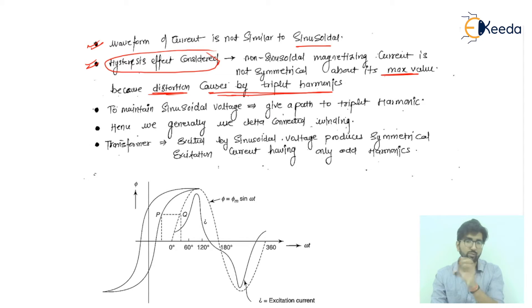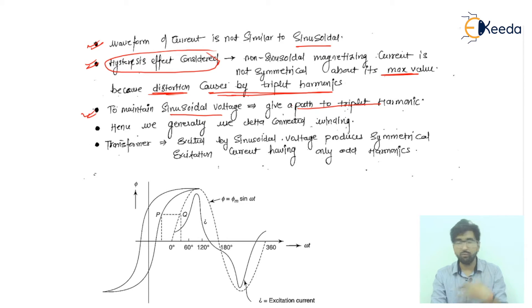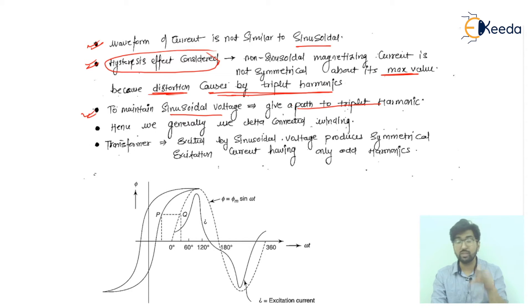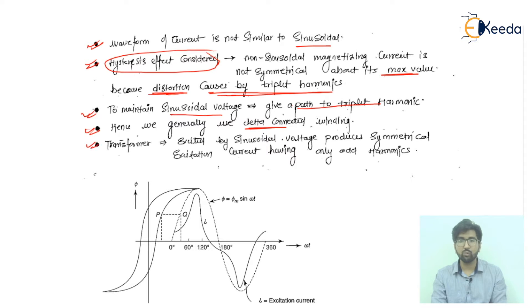These harmonics cause fundamental problems. We generally want a sinusoidal voltage waveform. To maintain sinusoidal voltage, a path must be given to the triplet harmonics. We will have fundamental harmonics plus triplet harmonics (5th, 7th, 11th, 13th, etc.). Hence, to provide a path for the triplet harmonics, we generally use delta-connected windings.